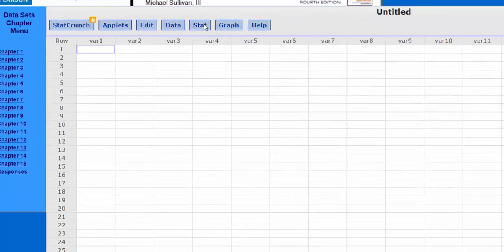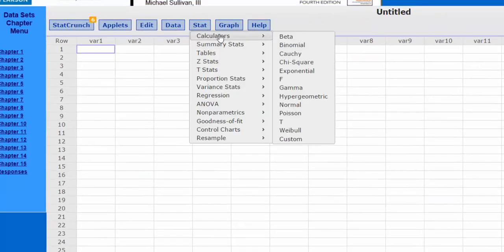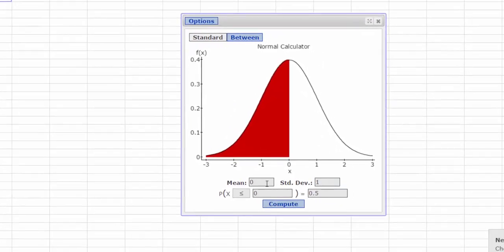Again, we're going to press Stat, Calculators, Normal, and we're going to use a mean of 0 and a standard deviation of 1.